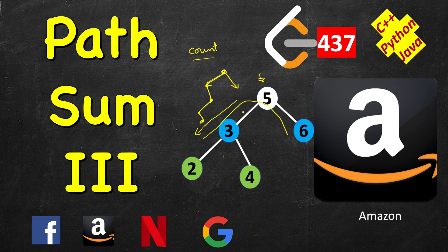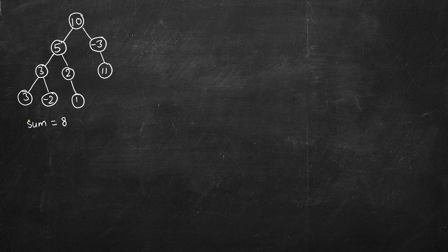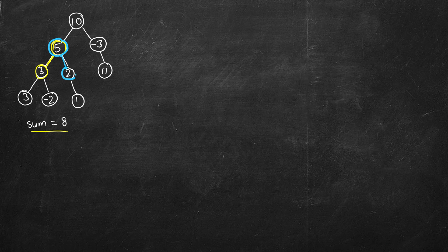We are given a target sum, and the sum of nodes on the path should equal that target. For example, with target sum 8: the path 5→3 sums to 8; the path 5→2→1 sums to 8; and the path -3→11 sums to 8 as well — negative values are allowed. So there are three valid paths and we return 3.